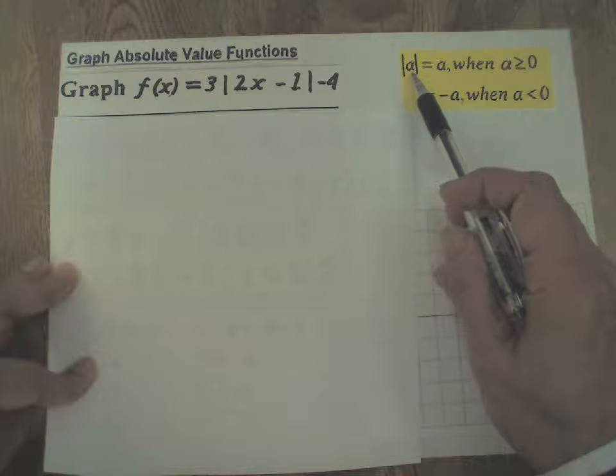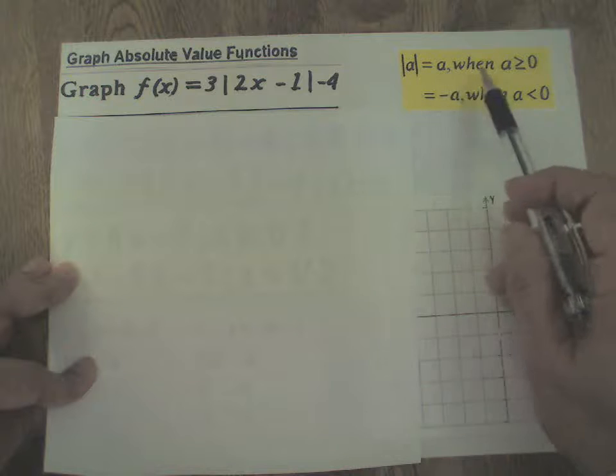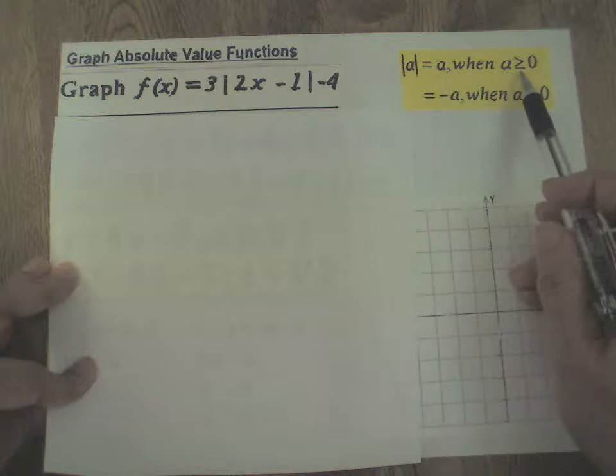So absolute value of 2x - 1 is equal to 2x - 1 when 2x - 1 is greater than or equal to 0, i.e., when x is greater than or equal to 1/2.